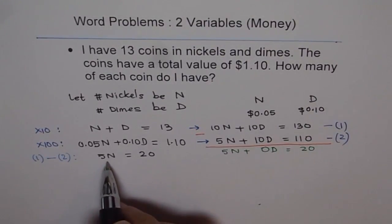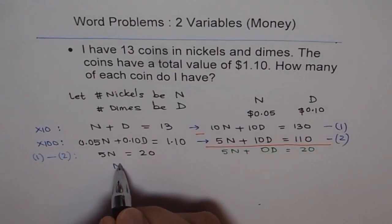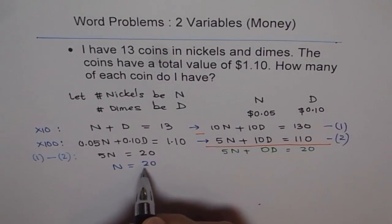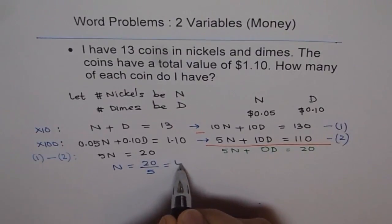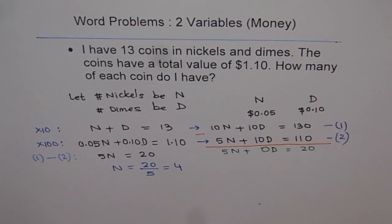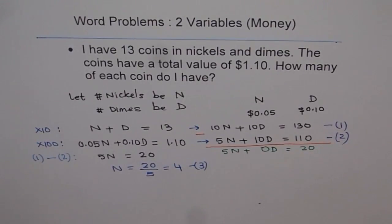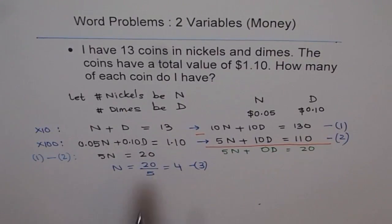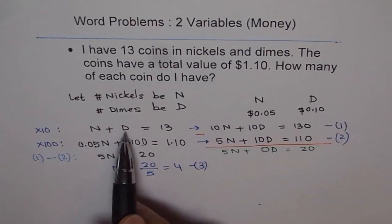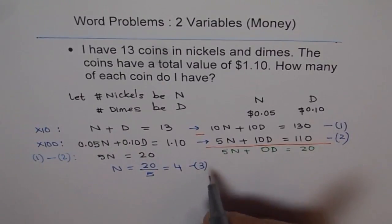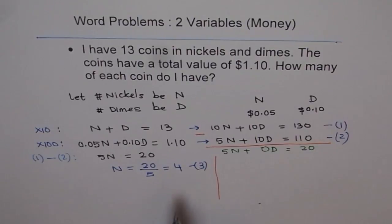Now from here, we can find number of nickels, which is equals to 20 divided by 5 and that is 4. So we know number of nickels is 4. We will call this equation as equation 3. Now we know a number of nickels, we can find number of dimes from equation 1, the initial equation, n plus d equals to 13.